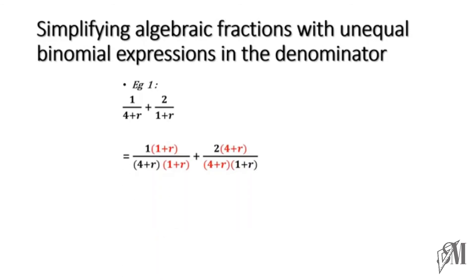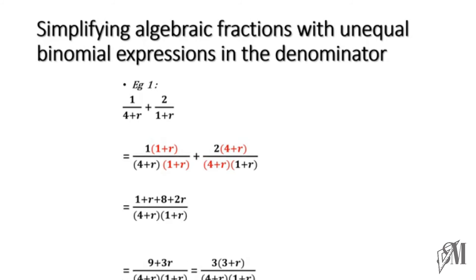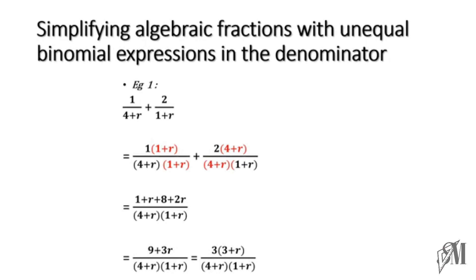The least common multiple of these two denominators is (4 plus r)(1 plus r). So the first fraction must be multiplied by (1 plus r) and the second fraction must be multiplied by (4 plus r) — I have marked the multiplying terms in red. Removing the brackets: 1 times 1 is 1, plus 1 times r is r; and 2 times 4 is 8, plus 2 times r is 2r. The common denominator is (4 plus r)(1 plus r). Simplifying: 1 plus 8 is 9, and r plus 2r is 3r, giving 9 plus 3r. Factorizing, 3 can be taken out, so the final answer becomes 3(3 plus r) over (4 plus r)(1 plus r).